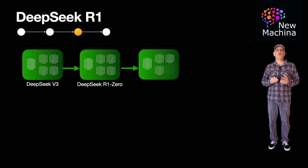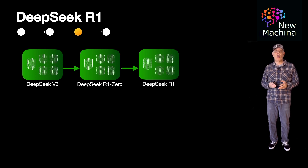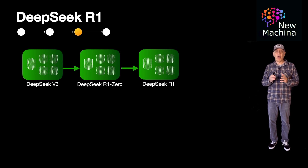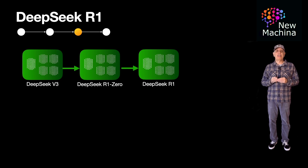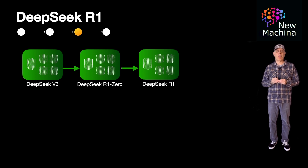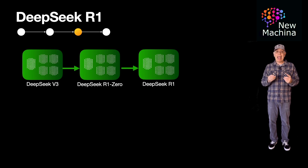The next DeepSeek reasoning model, coming in late January 2025, was DeepSeek R1. It continued to utilize a mixture of experts architecture and comprised 671 billion total parameters with only 37 billion parameters activated per token. This LLM release focused on mathematical reasoning, logical inference, and coding tasks. DeepSeek R1 achieved performance comparable to OpenAI's O1 model — this is the model that broke into the mainstream in late January and had my aunts and cousins texting me asking me all about it.